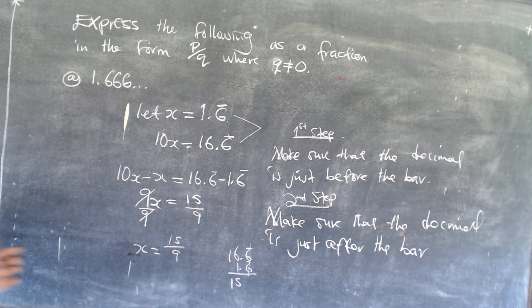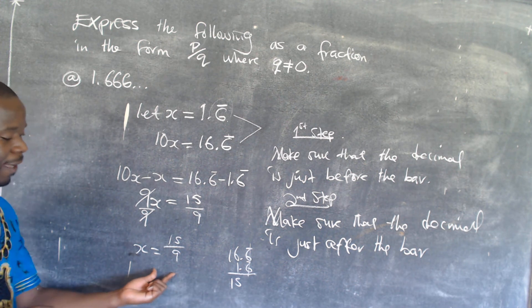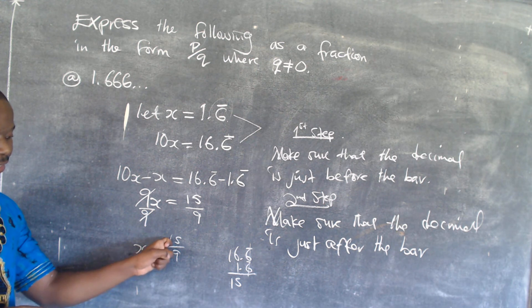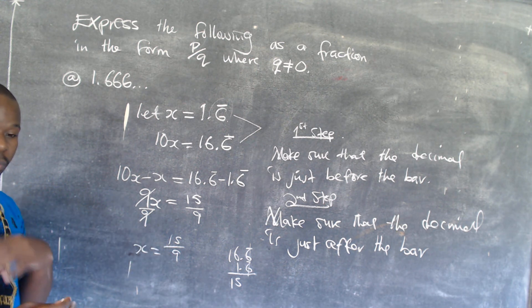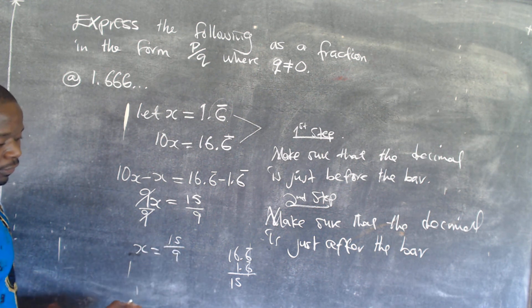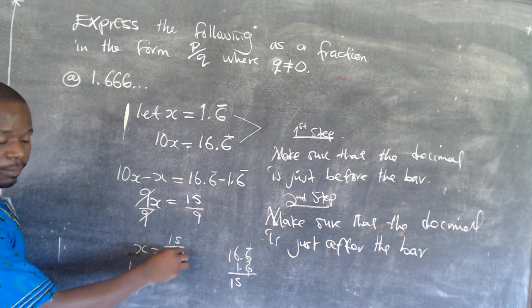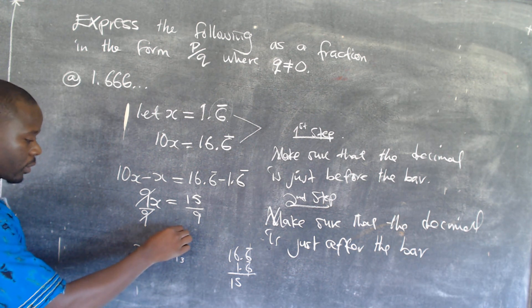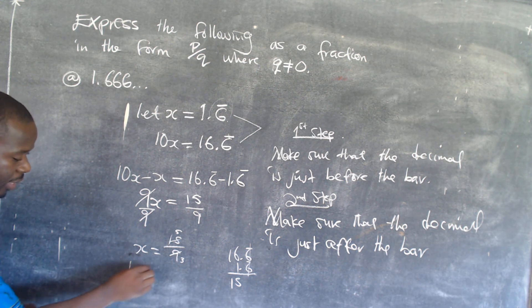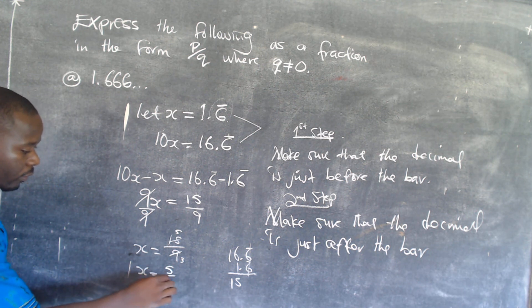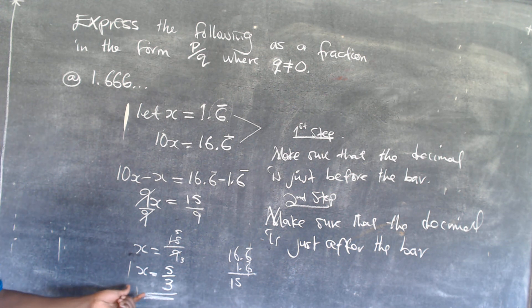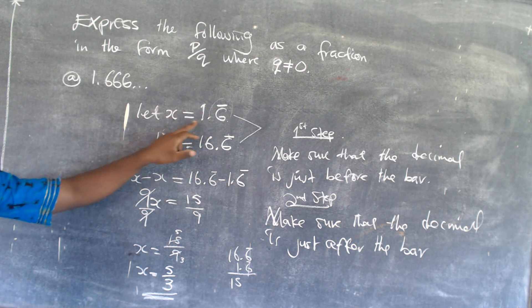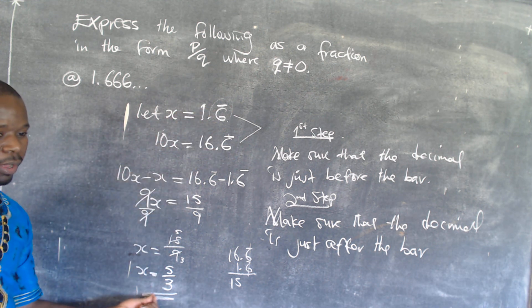The moment you reach this step, we are supposed to find the factor that can go into both 15 and 9. We are going to find the GCF of 15 and 9. In this case, we can use 3: 3 into 9 gives 3, and 3 into 15 gives 5. So the value of x would be 5 over 3. Since we let x equal to 1.6̄, this means that 1.6̄ is the same as 5 over 3. That is the way we express this repeating decimal as a fraction.